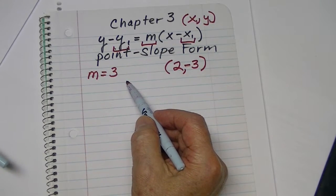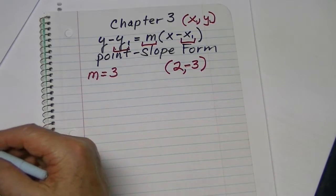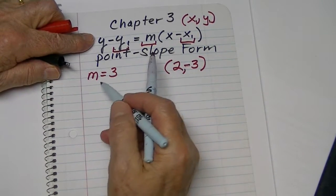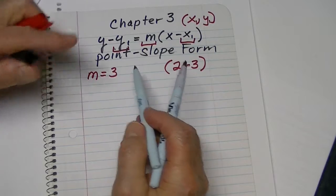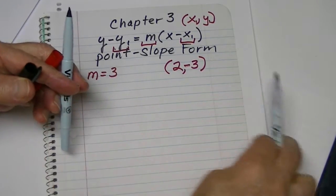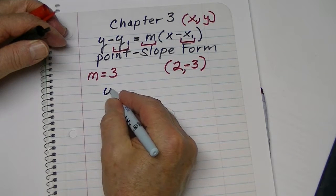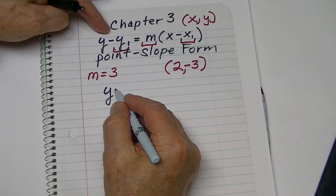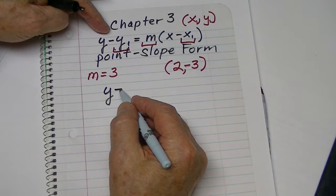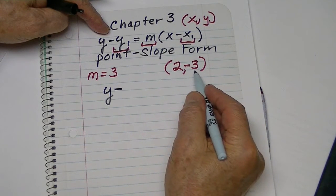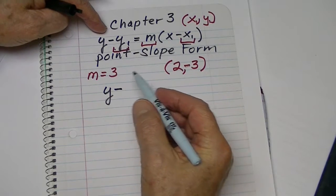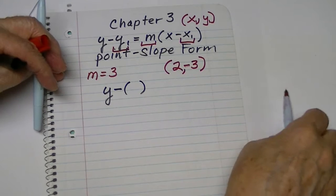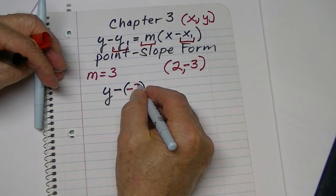Well, what we do then is take this material from our equation, we're going to go Y here. And then part of the formula is the minus sign. Now, what is our Y-member? Well, it happens to be a negative 3.